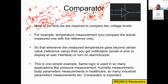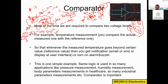Whenever the measured value goes beyond the reference value, we need to immediately give some notification to the user. This is just a few examples, but the same logic is used in so many applications like pressure measurement, humidity measurement in oil and gas, humidity level in soil for agriculture, body parameter measurements in healthcare, and many industrial parameter measurements. So the comparator is an important circuit.